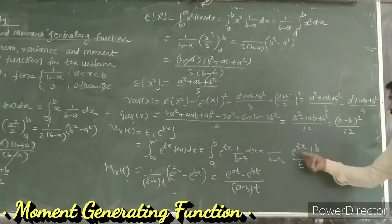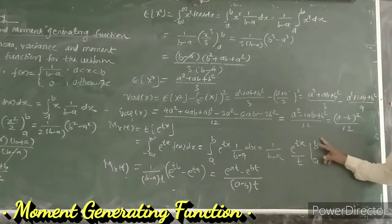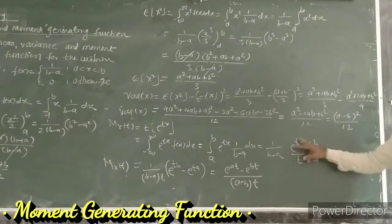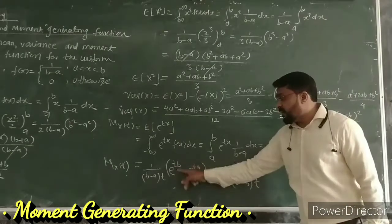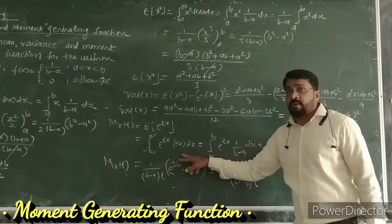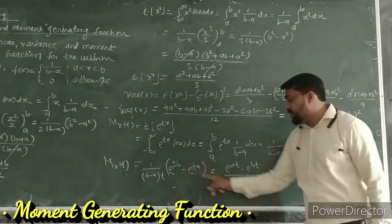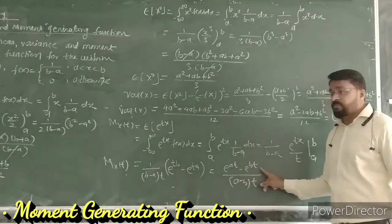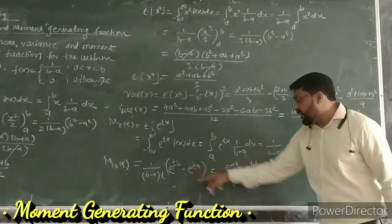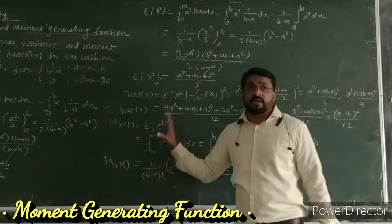Substituting the limits from a to b and including the 1/(b-a) factor gives [e^(tb) - e^(ta)] / [t(b - a)]. This is the moment generating function we have found.